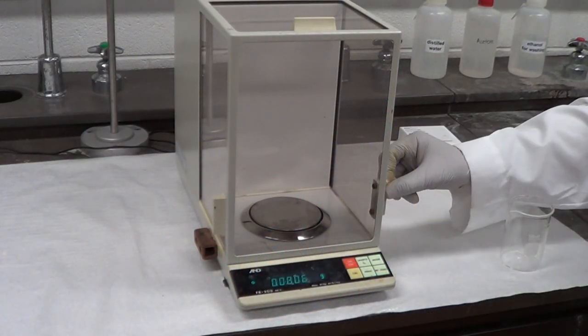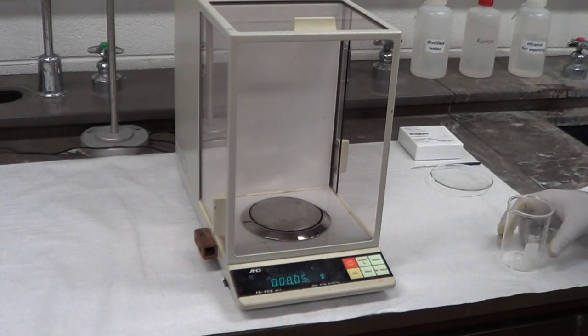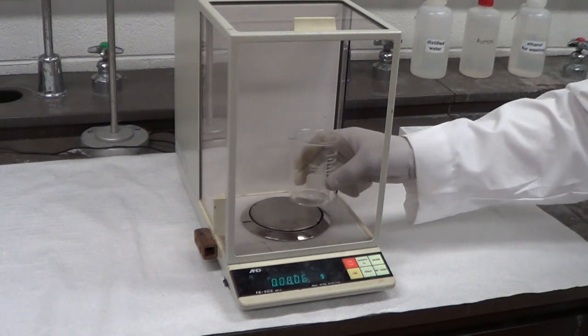Before we start our chemical reaction, we will use measuring balance to record the weight. We will place the beaker on the measuring balance.